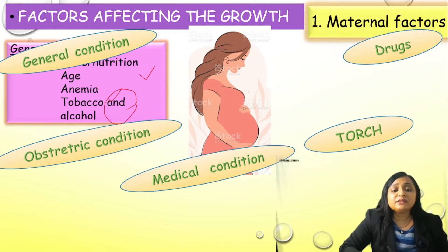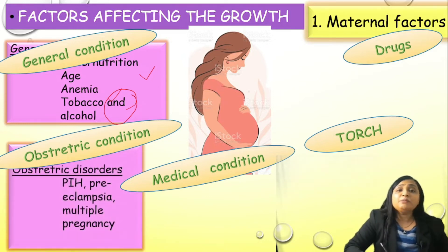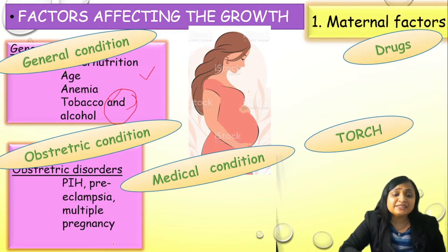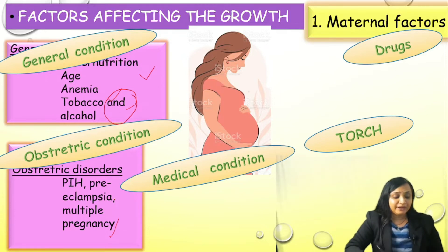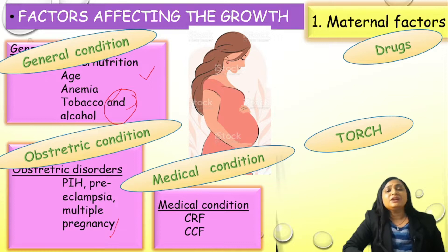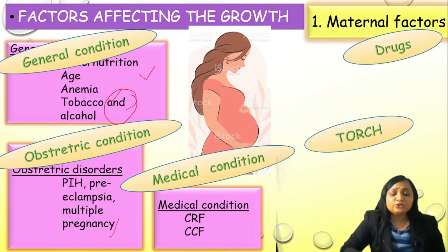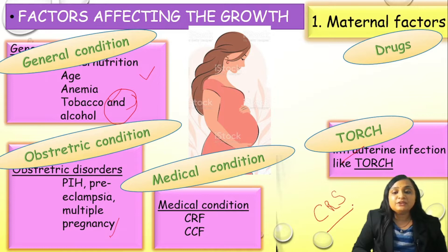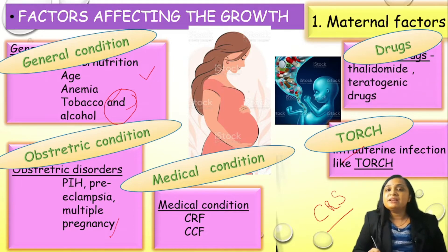Obstetric conditions also play an important role, like pregnancy-induced hypertension, preeclampsia, or if she is carrying a multiple pregnancy — then also the growth of the fetus will be at stake. Maternal medical conditions are also important, like chronic renal failure, chronic cardiac failure, rheumatic heart disease, tuberculosis, or connective tissue disorders, which will have some effect on fetal growth. It is very important to understand about TORCH. If she encountered TORCH in the first trimester, the baby may have sequelae in the form of congenital rubella syndrome. If she has taken any drug with a deleterious effect on the baby, the baby may have a congenital malformation.